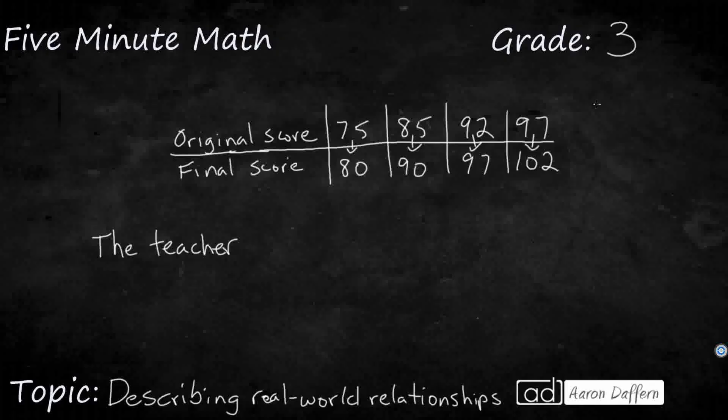So I need to find the rule first, and it looks like we're still getting bigger, so it's going to be an addition because I can't think of anything that multiplies from 75 to 80. So let's see, 75 plus what equals 80? Well, that's just going to be 5 away. So could we say a plus 5 for each of these? Could we say 85 plus 5 equals 90? Yes, that works. 92 plus 5 makes 97. Yep, and this child got over 100. Good job. So the rule is plus 5.